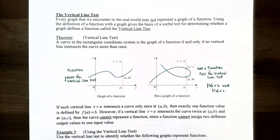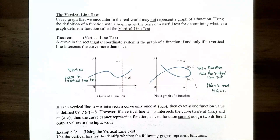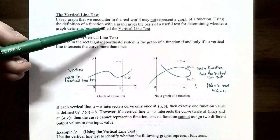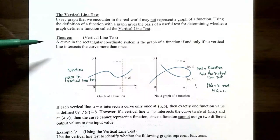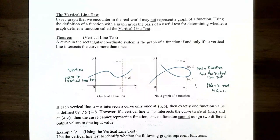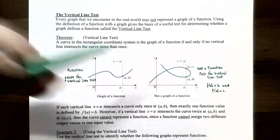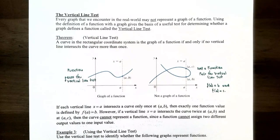Not every graph represents a function. Using the definition of a function — every x value can only correspond to exactly one y value — we get the vertical line test. The theorem states: a curve in the xy-plane represents a function if and only if no vertical line intersects the curve more than once. If any vertical line intersects the curve more than once, the curve is not a function.